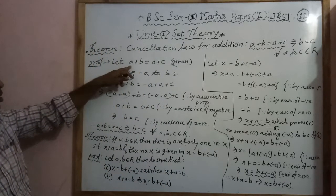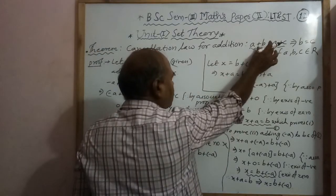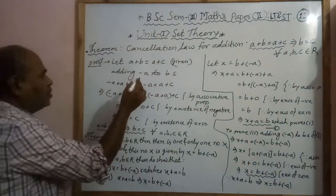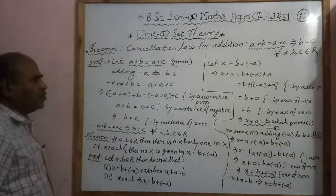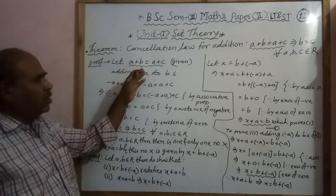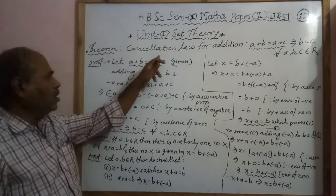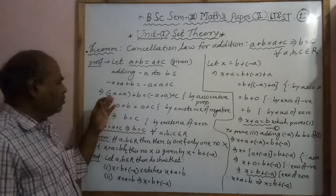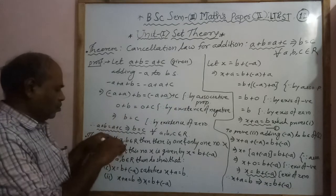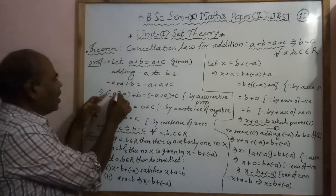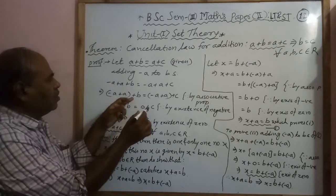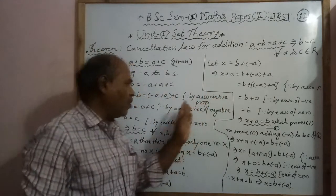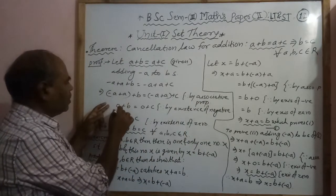Proof of the theorem: Given a plus b equals a plus c, we have to prove b equals c. Now, adding minus a to both sides of this equation — on the left hand side and also the right hand side — we get: minus a plus a plus b equals minus a plus a plus c. Then by the associative property, we associate minus a and a in one bracket on each side.